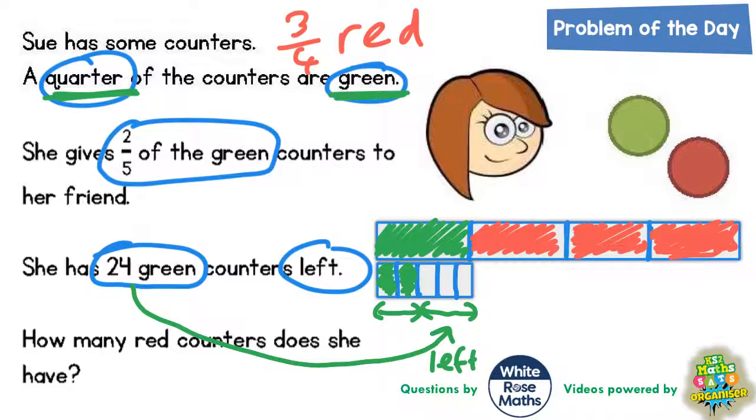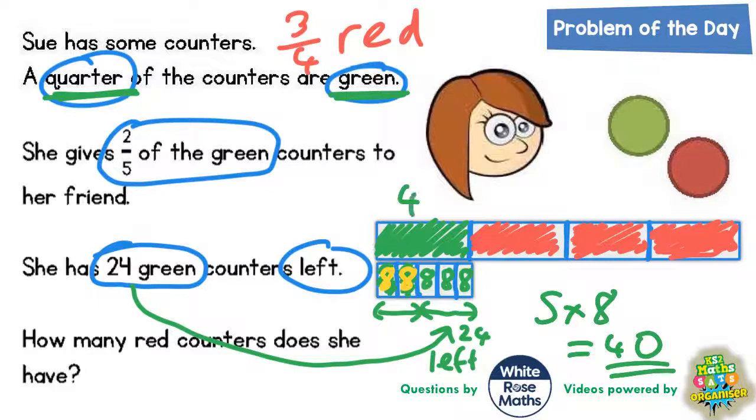So if that is worth 24 and it's three sections, that must be worth 8 on each section. So 8, 8 and 8. Now if each section is worth 8, the other two sections that she gave away must also be worth 8. And this makes the whole green section worth 5 lots of 8. And 5 lots of 8 is 40. So there must have been 40 green counters.